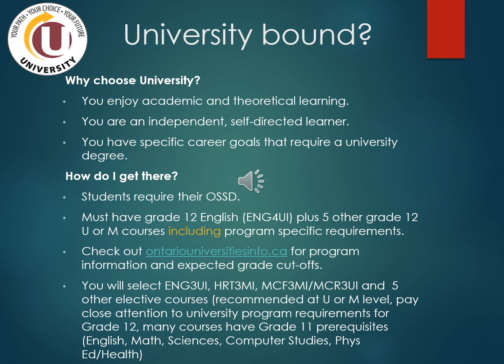Are you thinking of attending university? Do you enjoy academic and theoretical learning? Are you an independent, self-directed learner with specific career goals that require a university degree? To get to university, you must successfully complete your Ontario Secondary School Diploma, have grade 12 English at the university level, plus five other grade 12 U or M level courses including any program-specific requirements. Check out OntarioUniversitiesInfo.ca for program information, required courses, and expected grade cutoffs. Next year you will select English 3U, Religion College/University, either College/University Math or University Level Math, and five other elective courses recommended at the U or M level.